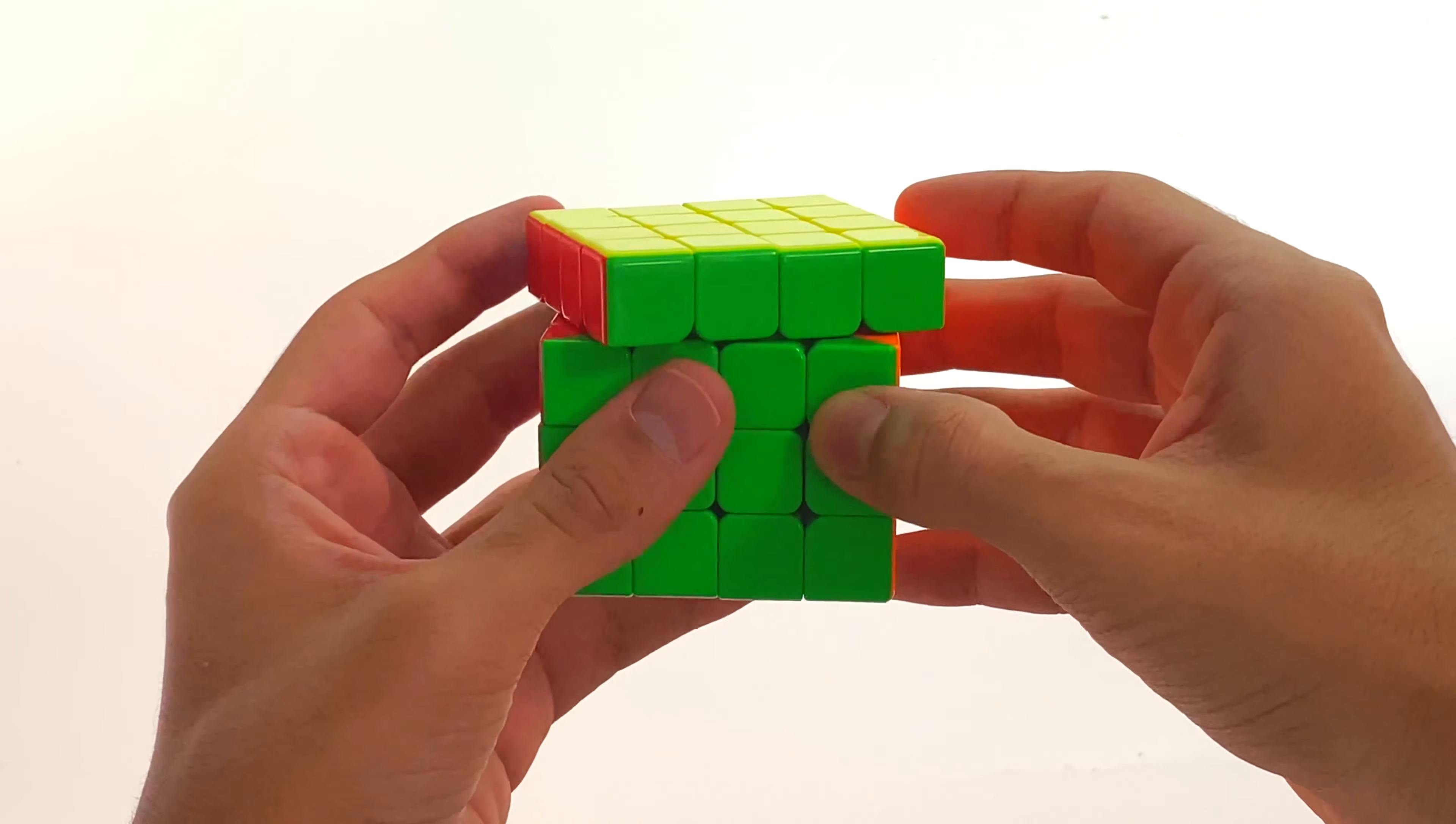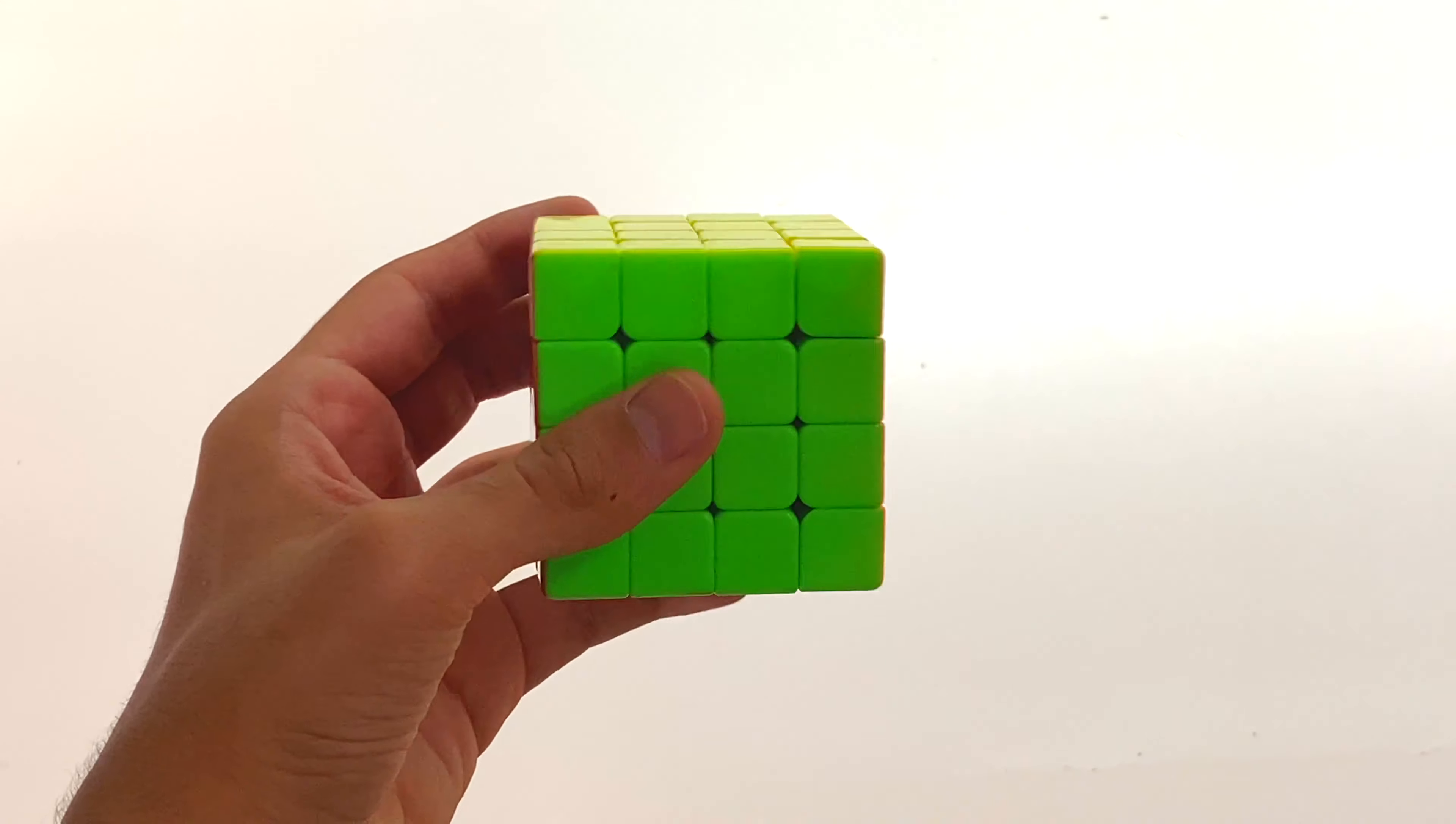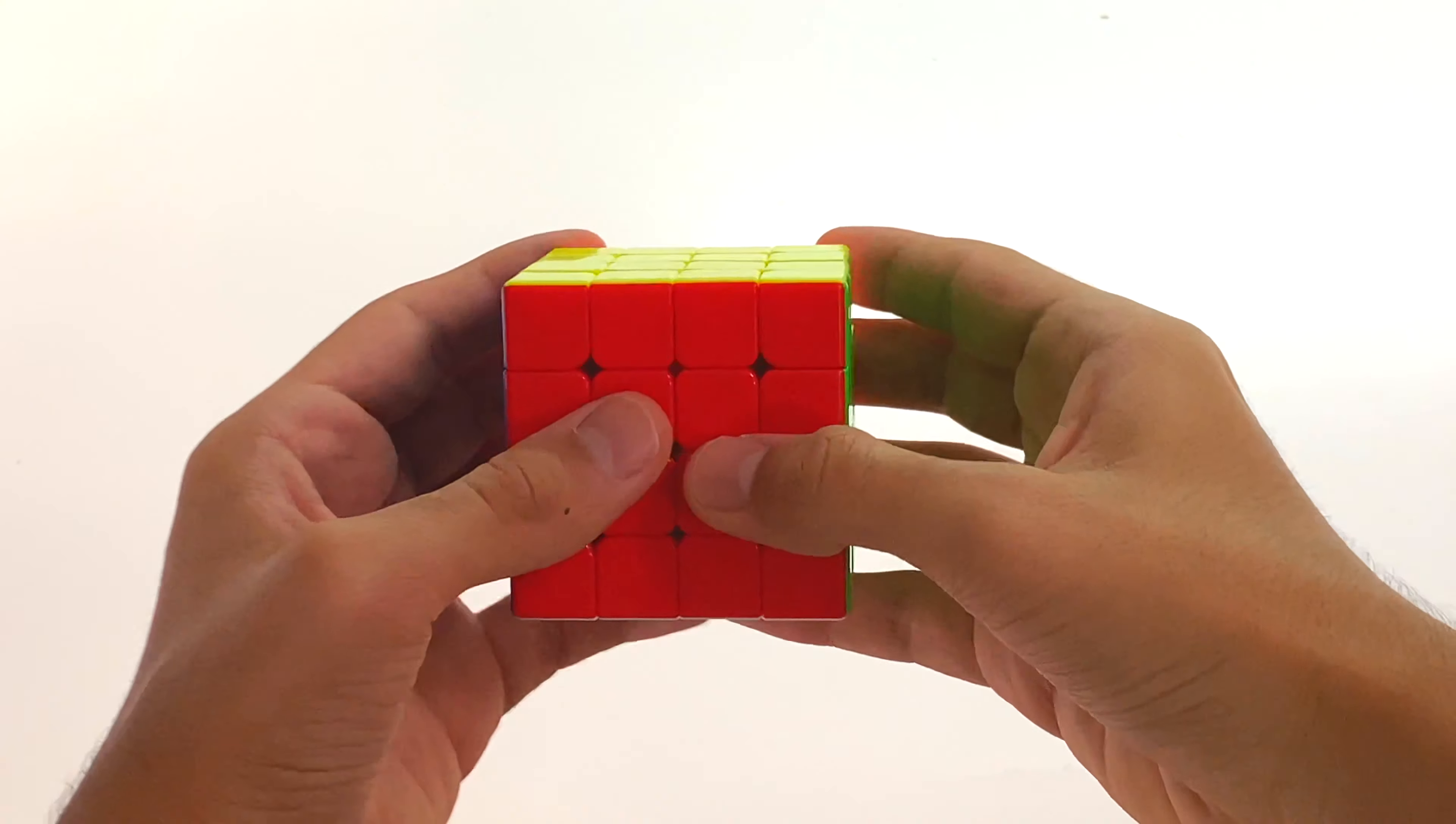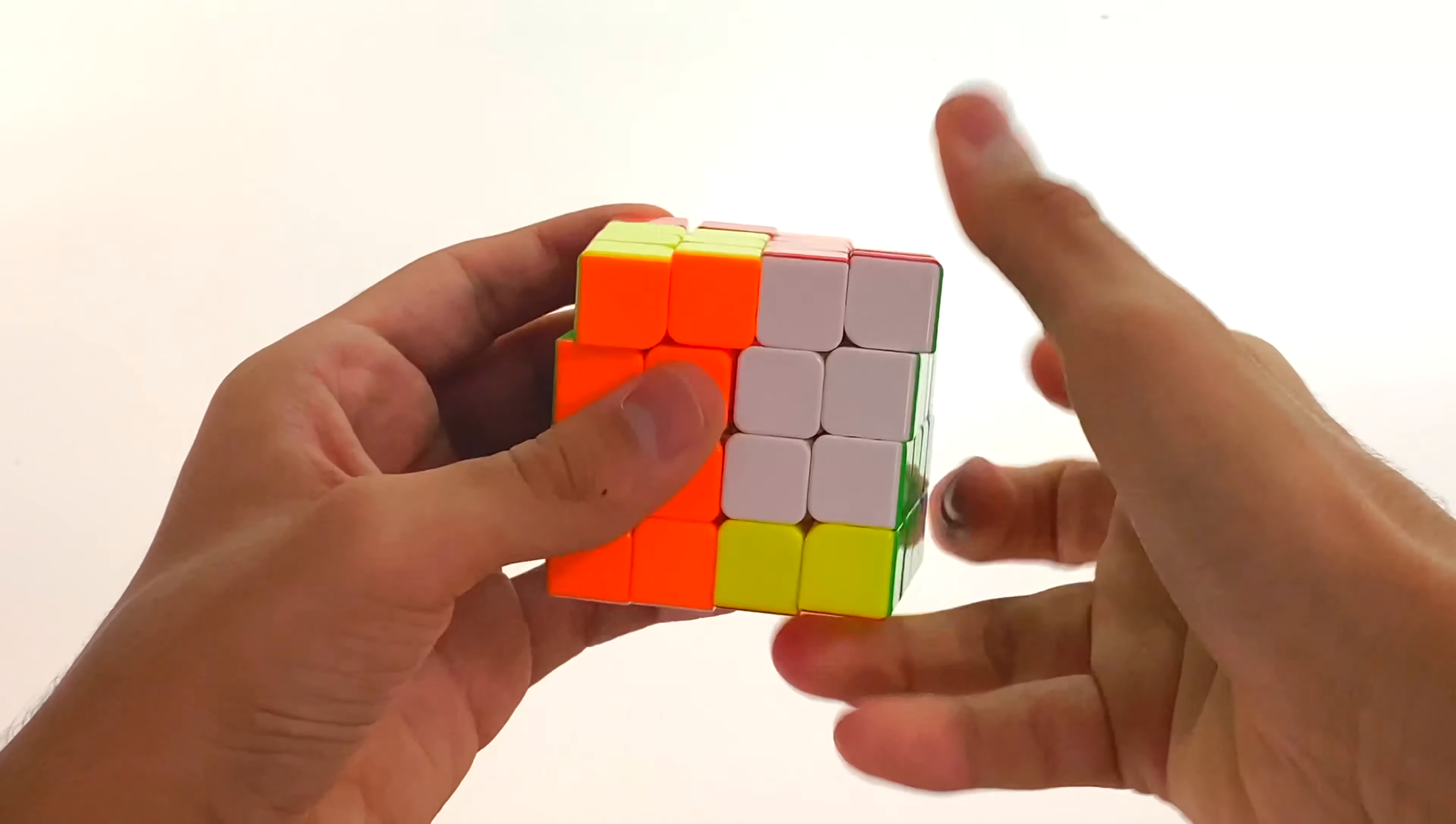Now, the one drawback of this puzzle is its corner cutting. While it is not bad at all, it can go up to this much forward and this much reverse. It is not as good as the GTS2M which can go further as you guys can see right here. However, it is better than the MGC 4x4 and unlike on the MGC, my turning flows relatively well on it. I only get minor catches on the WRM.